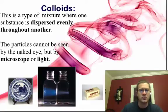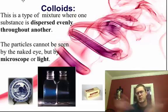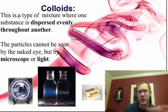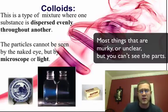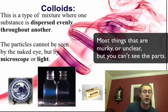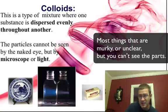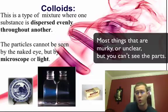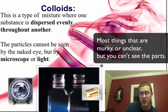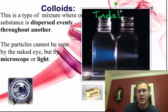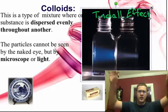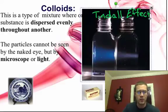Then there are colloids. This type of mixture is where one substance is dispersed evenly throughout another. Dispersed means to separate or spread out, so dispersing evenly means they are equally spread throughout the substance. Examples include smoke or porcelain, or substances like milk or butter where you can't see the parts with the naked eye but you can see them with a microscope or by light. This concept is called the Tyndall effect — the same reason why when you go through fog and use a flashlight, it separates out, spreading light by reflection off the different parts.